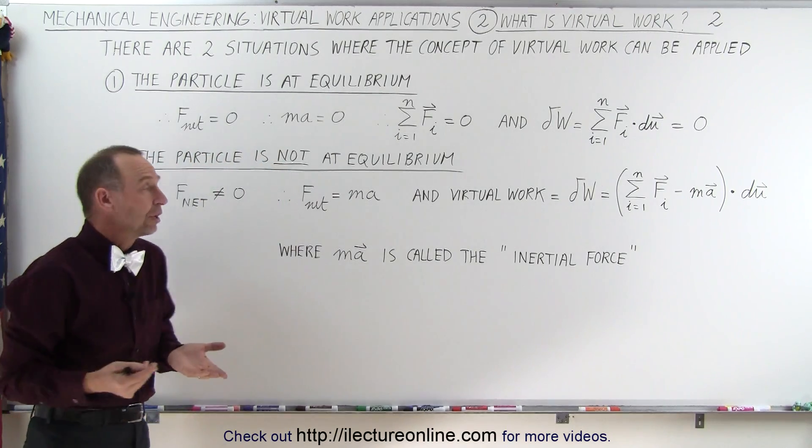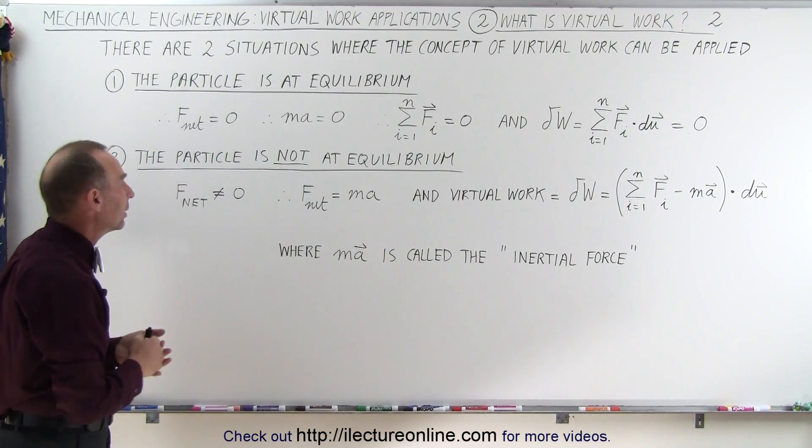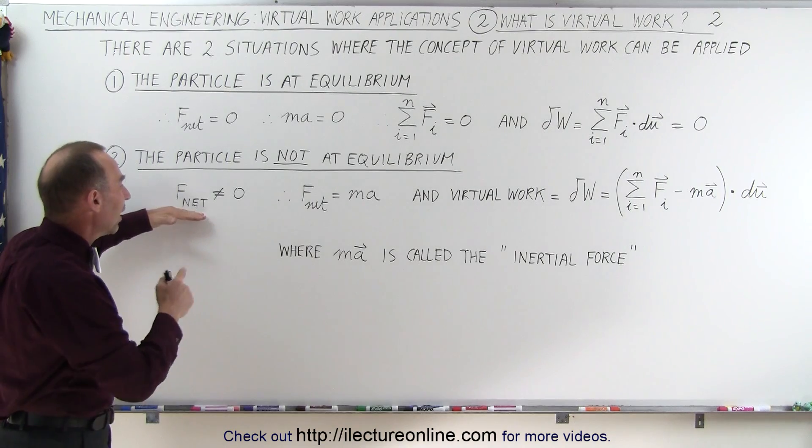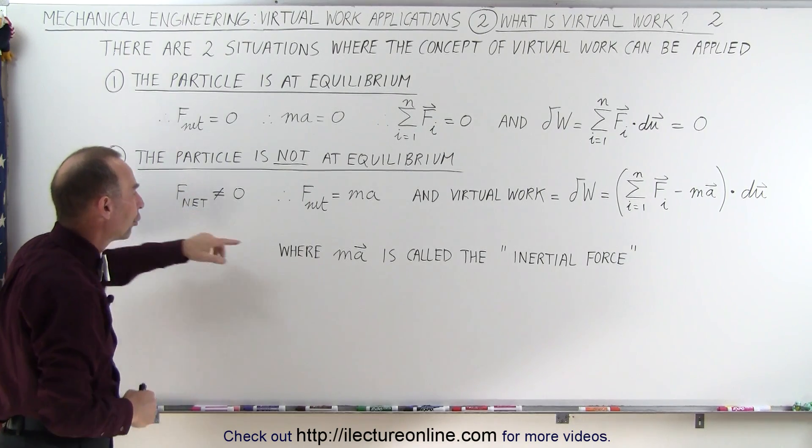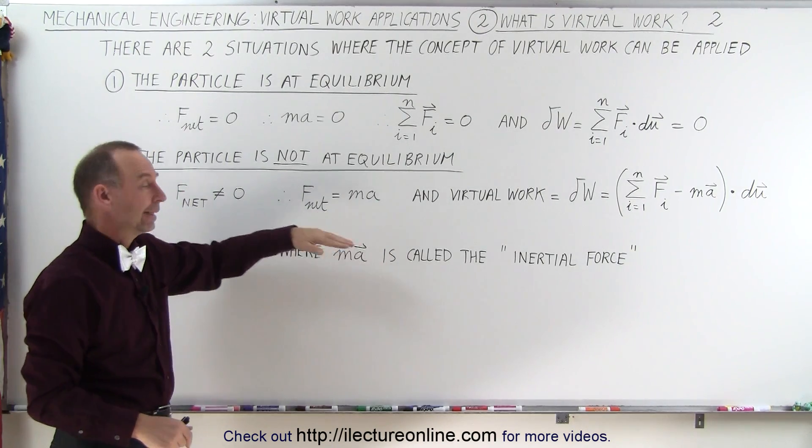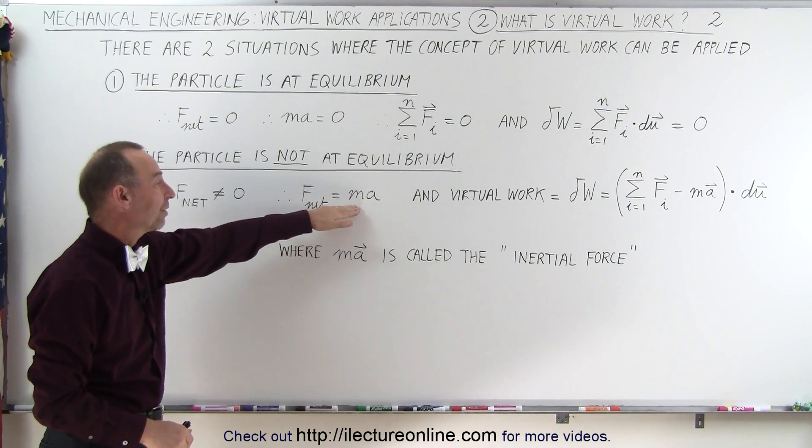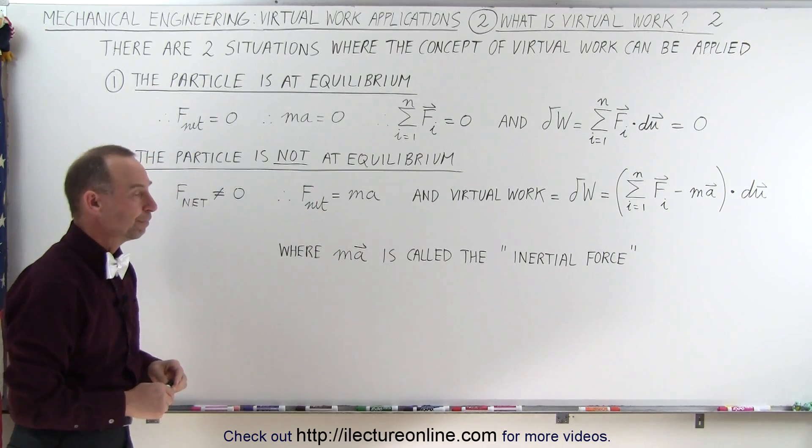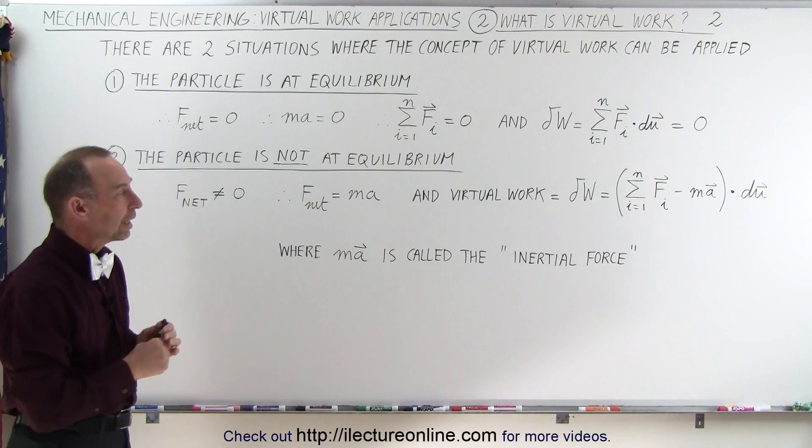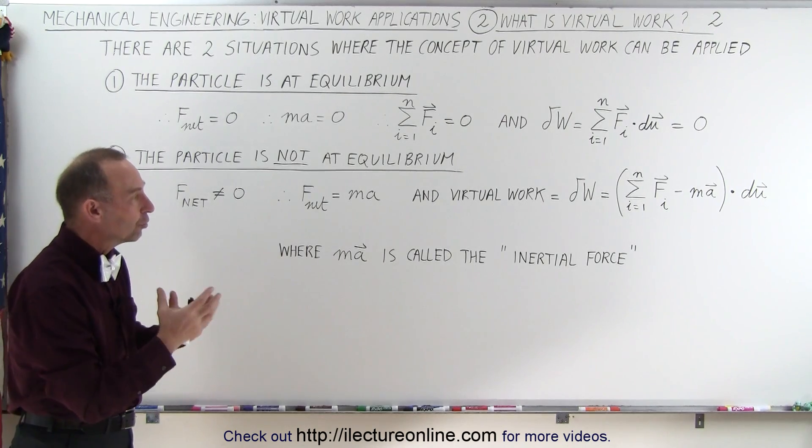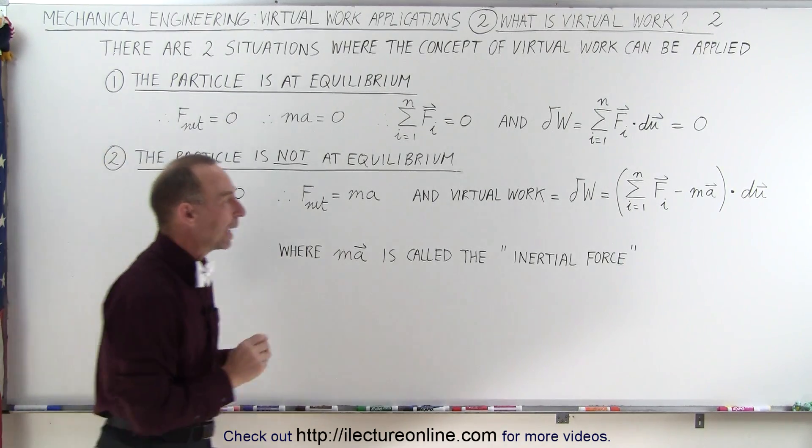But we can have situations where the particle is not at equilibrium, so the net force is not equal to zero, and therefore there will be an acceleration. F net is equal to the mass of the particle times the acceleration. But now we can also say that the virtual work can also be equal to zero if we look at it this way.